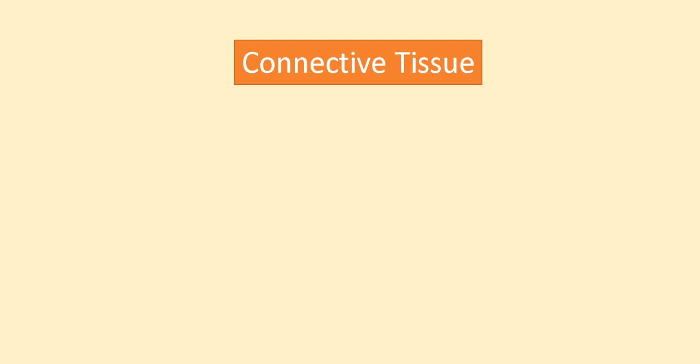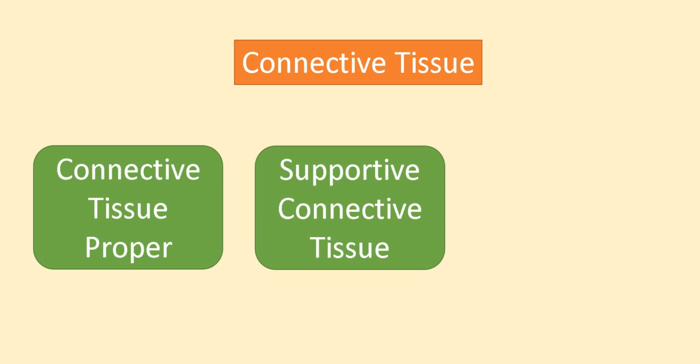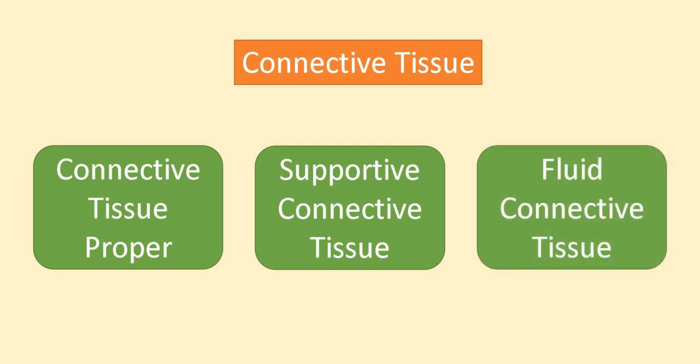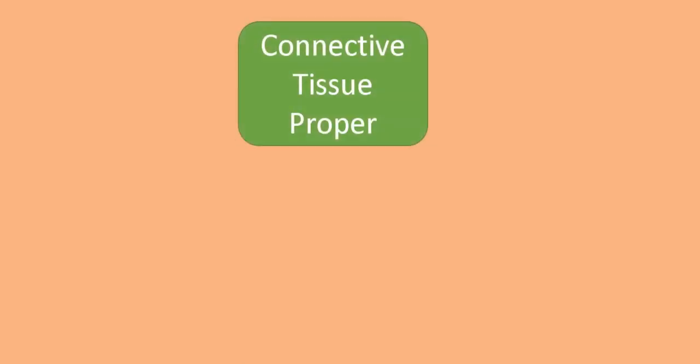Connective tissue is the second type of animal tissue. It is classified into connective tissue proper, supportive connective tissue, and fluid connective tissue. Connective tissue proper mainly serves for packing and binding the organs, facilitating connection between organs and tissues. Supportive connective tissue provides support, and fluid connective tissue, though fluid in nature, also makes connections between body parts.